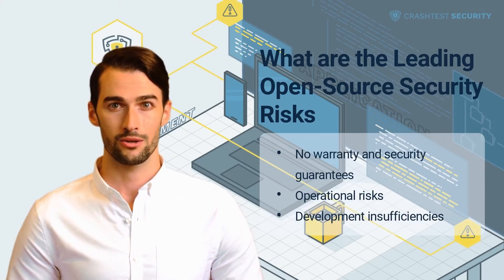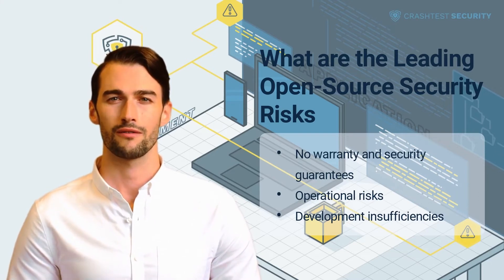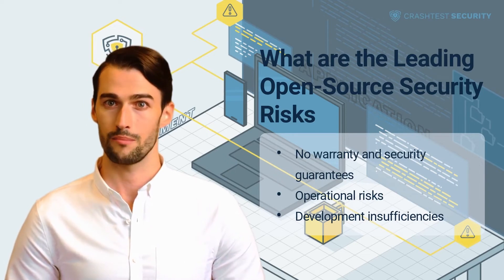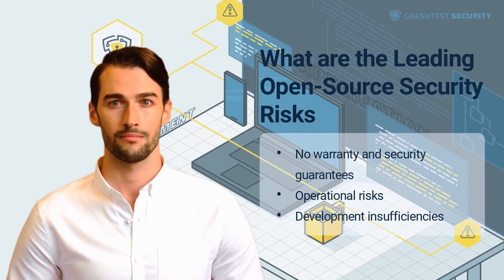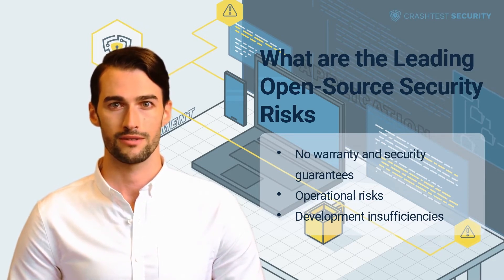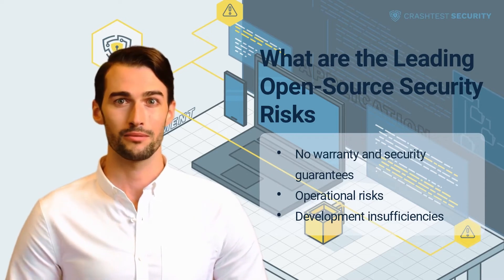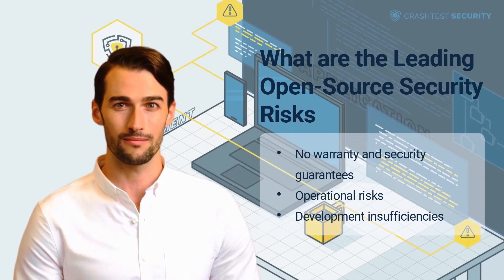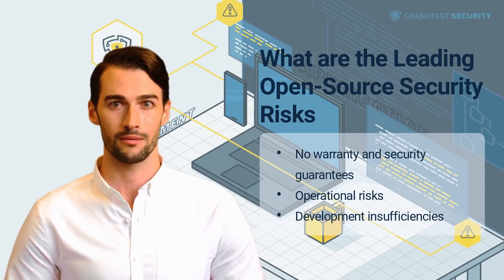No Warranty and Security Guarantees. With open-source software, there may be no verifications, support, warranty, or security guarantees. Open-source development is frequently a volunteer effort, and projects may be shut down or abandoned when developers can't keep up. This also means that there may or may not have been proper testing during the development process. Community members often provide some testing and support, but cannot be relied upon entirely to have spotted every possible issue.